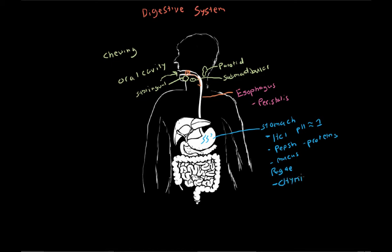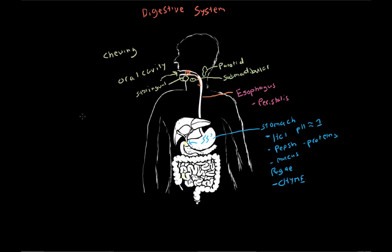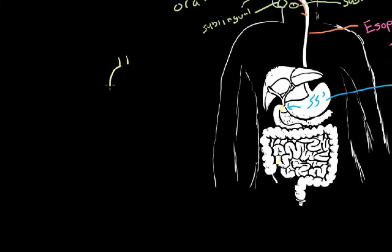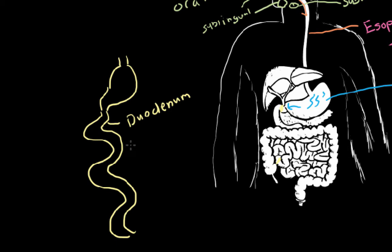So it started as a bolus, and now it's leaving the stomach as chyme. It's going to exit the stomach and come down into the small intestine. The small intestine has three parts. The first part is the duodenum. This is where a lot of different enzymes are dumped in from the accessory organs — the accessory organs being the liver, the pancreas, and the gallbladder. We'll get into those in following videos.